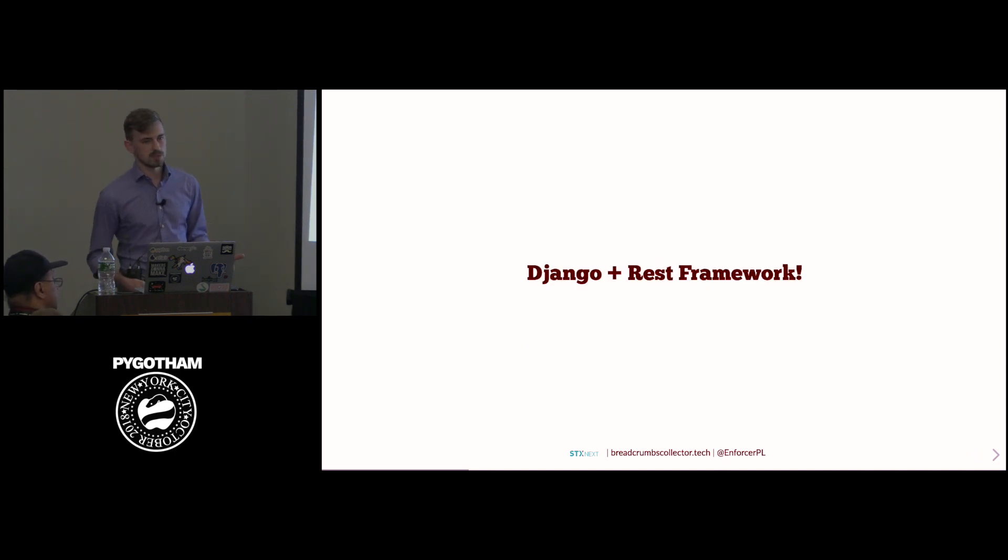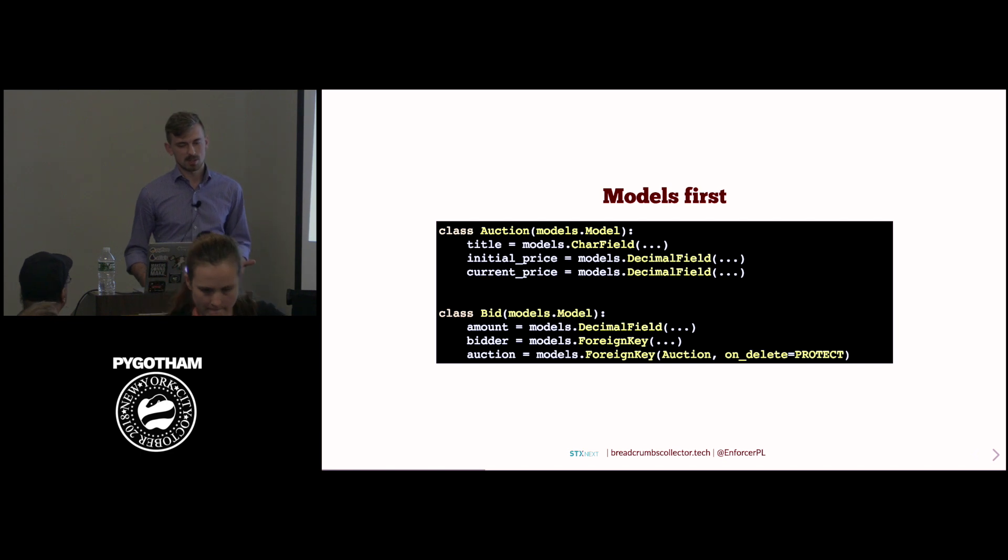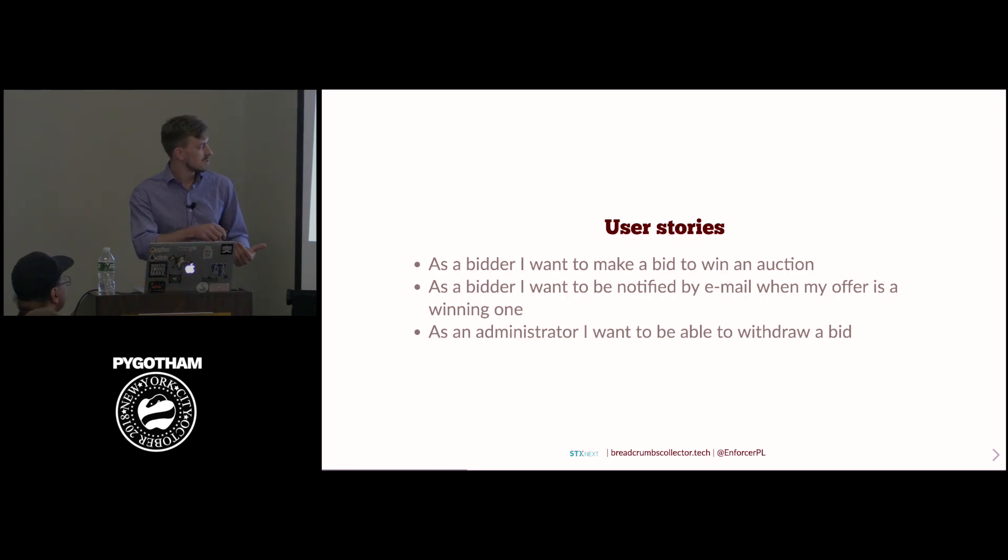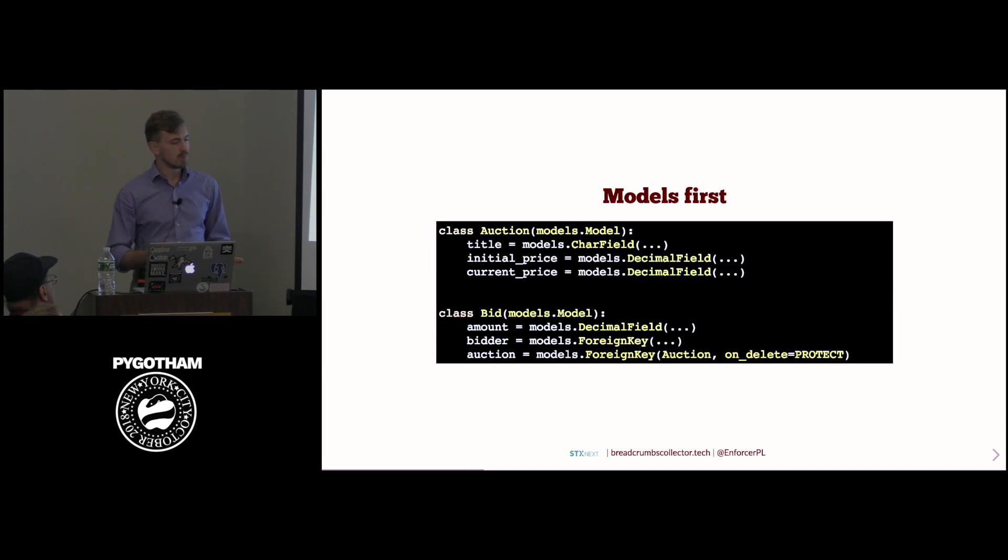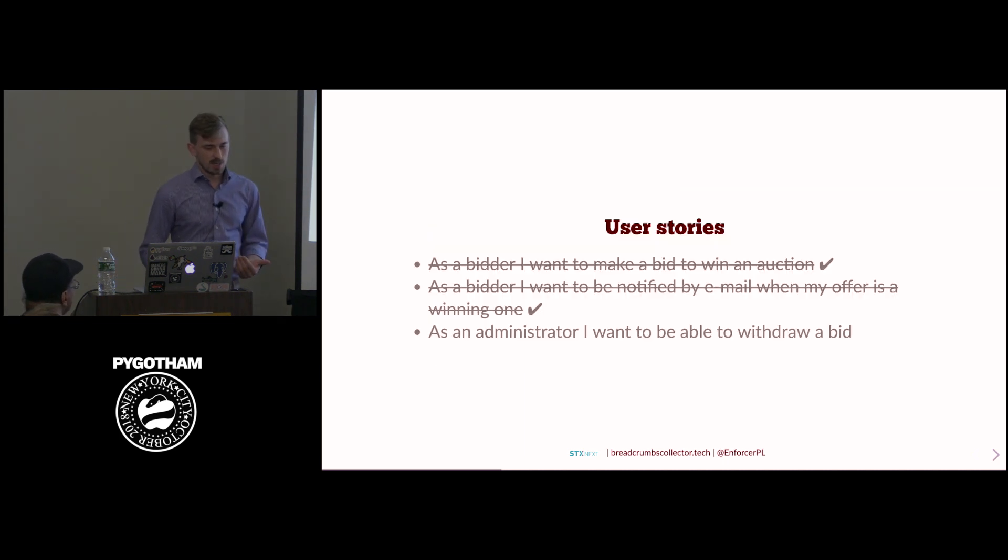So if we were to choose Django as framework and program it idiomatically, as this framework assumes, then we would start off with models. So we would just take these user stories, search for any verbs, and then we would just turn them into models. So this is the classic approach. And I would like to focus on the third one. So as an administrator, I want to be able to withdraw a bid. One of the coolest features of Django is that it has this admin panel, which literally saves you hours of work.